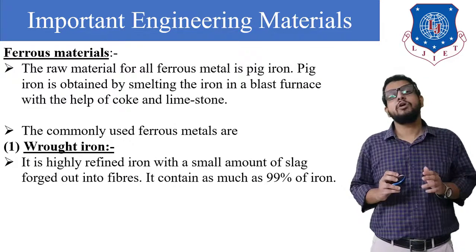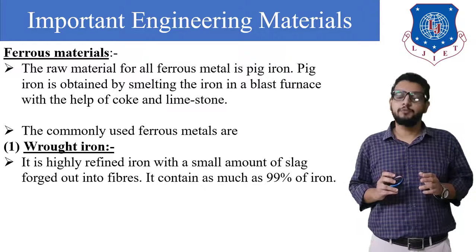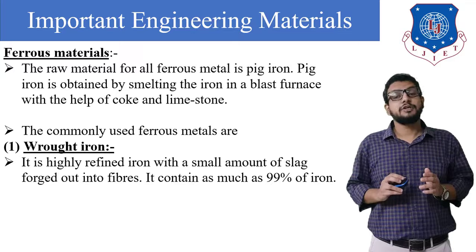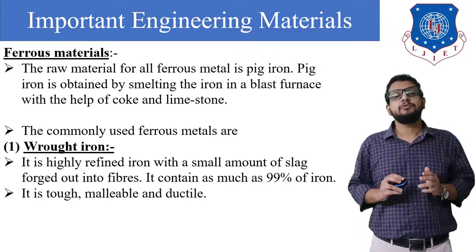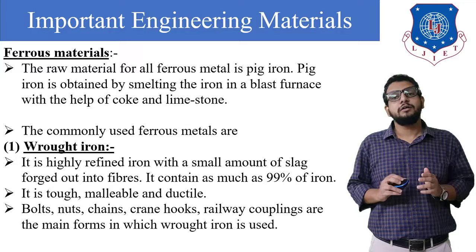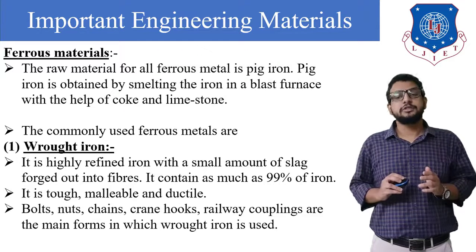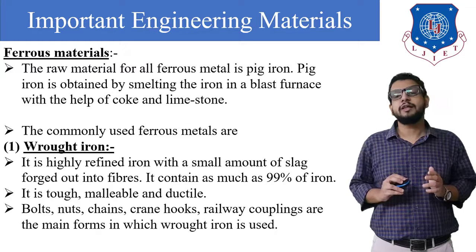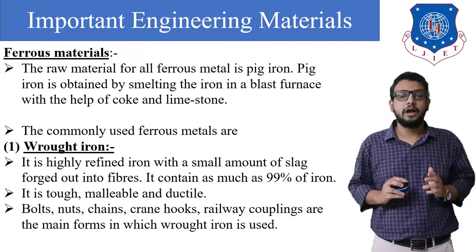Wrought iron is highly refined iron with a small amount of slag formed into fiber. It contains as much as 99% iron. It is tough, malleable, and ductile. Bolts, nuts, chains, crank hooks, and railway couplings are the main forms obtained from wrought iron.